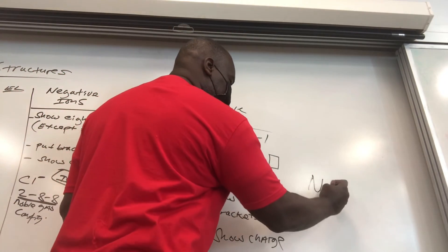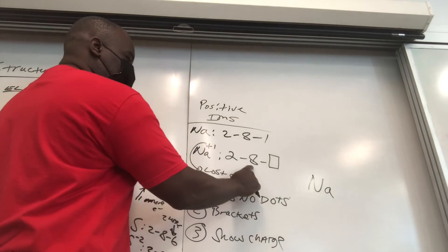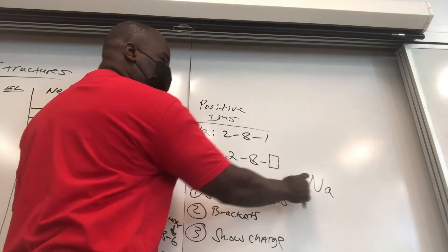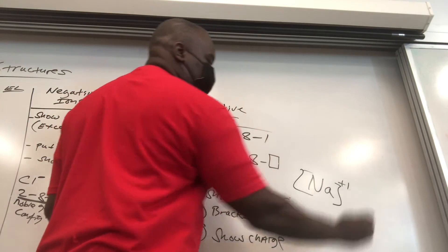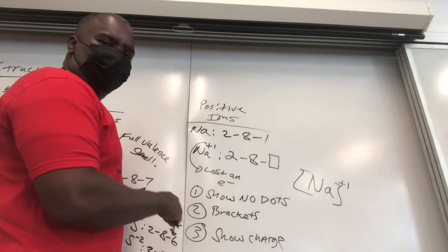So for Na plus 1 to show the dot structure for the positive ion, you write Na down. That's your kernel. But in the valence electron there's nothing, so we represent that as put no dots there. You put your brackets, and you put your plus 1 there. You're good to go.